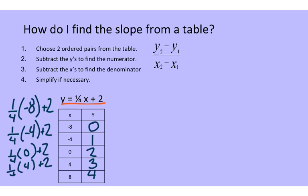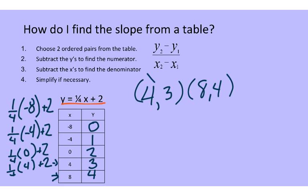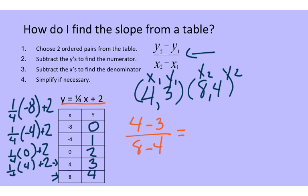Now that I have the table filled in, I'm going to find my two ordered pairs. I like to use positive ordered pairs, so I'm going to use (4, 3) and (8, 4). I'll mark these as x1, x2, y1, and y2, then put them into the formula: y2 minus y1 is 4 minus 3, over x2 minus x1 which is 8 minus 4. That gives 1 over 4, so my slope is 1/4.